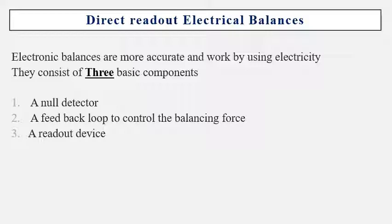Direct readout electrical balances are the most accurate and operate using electricity. They consist of three basic components: a null detector, a feedback loop to control the balancing force, and a relating readout device.